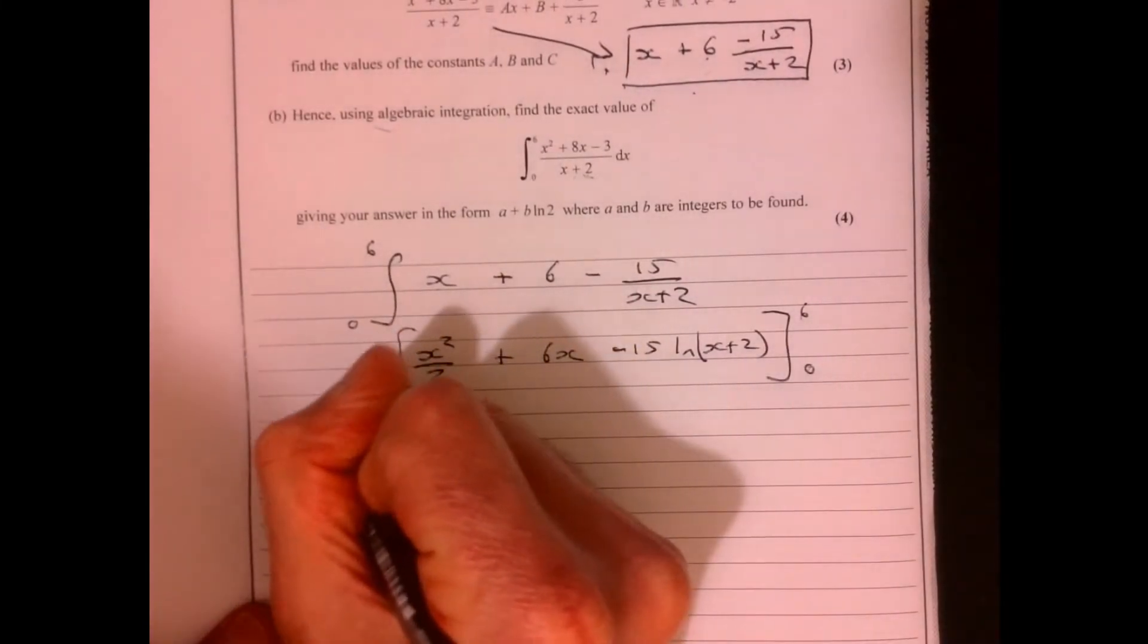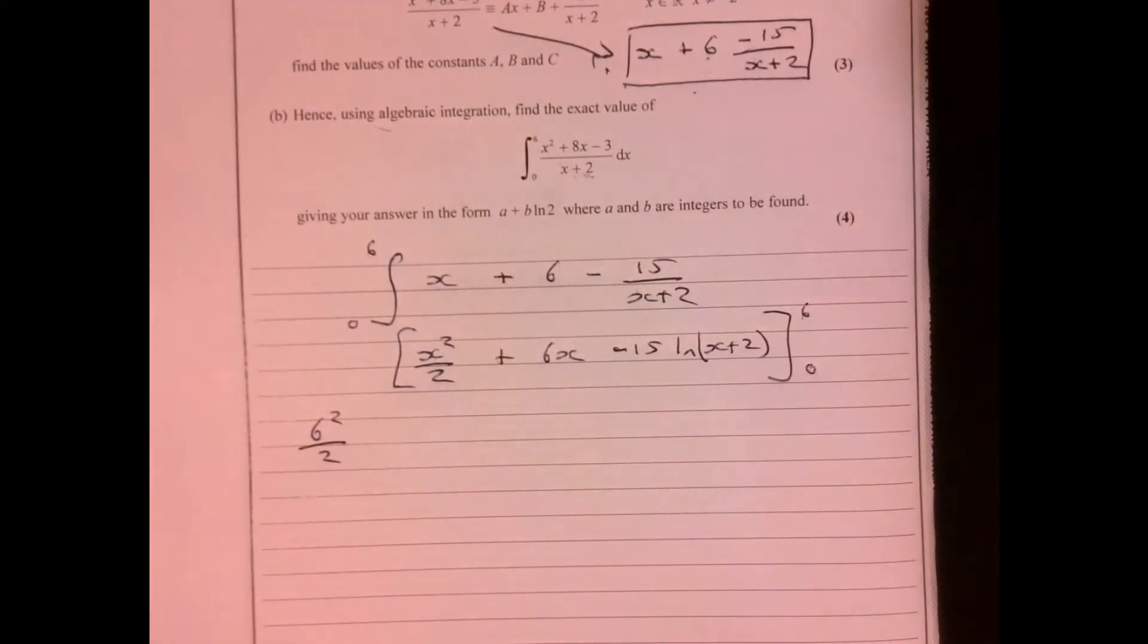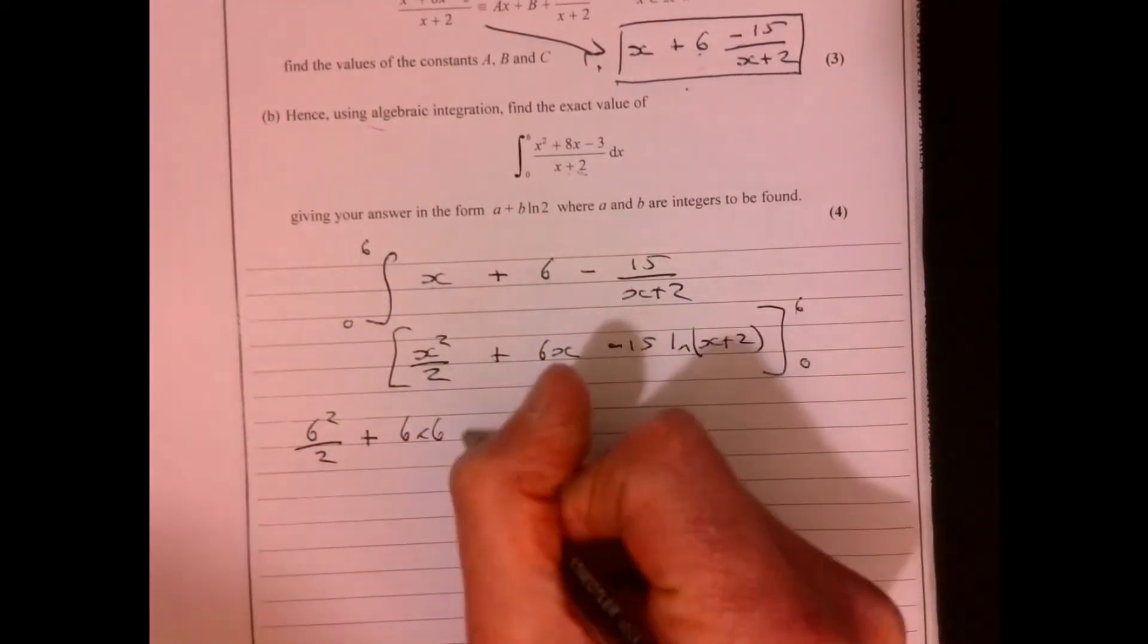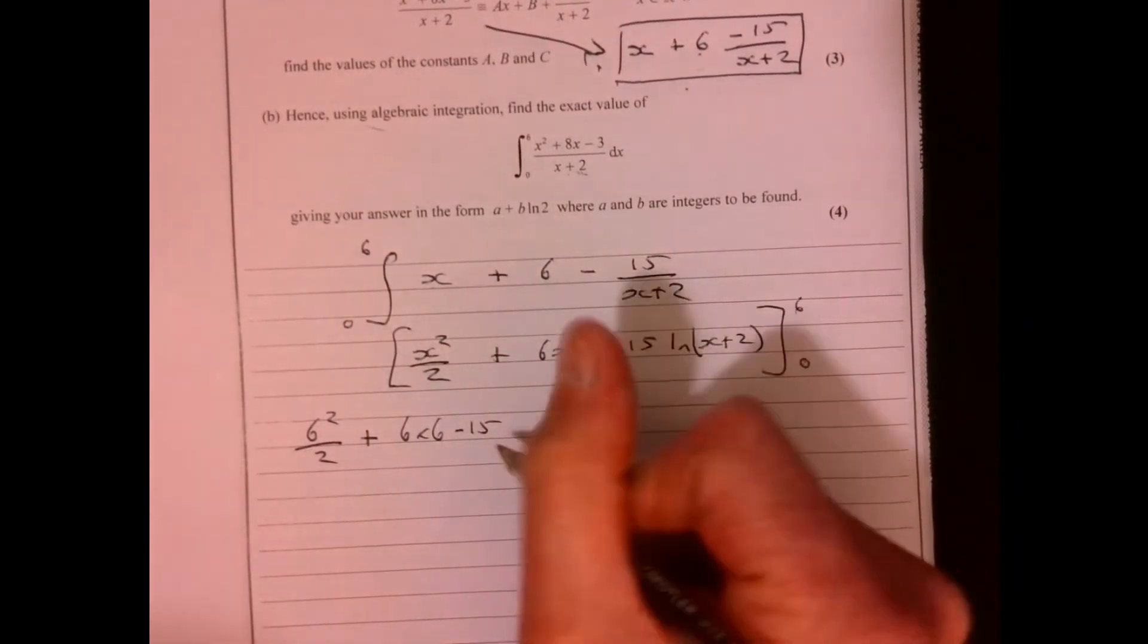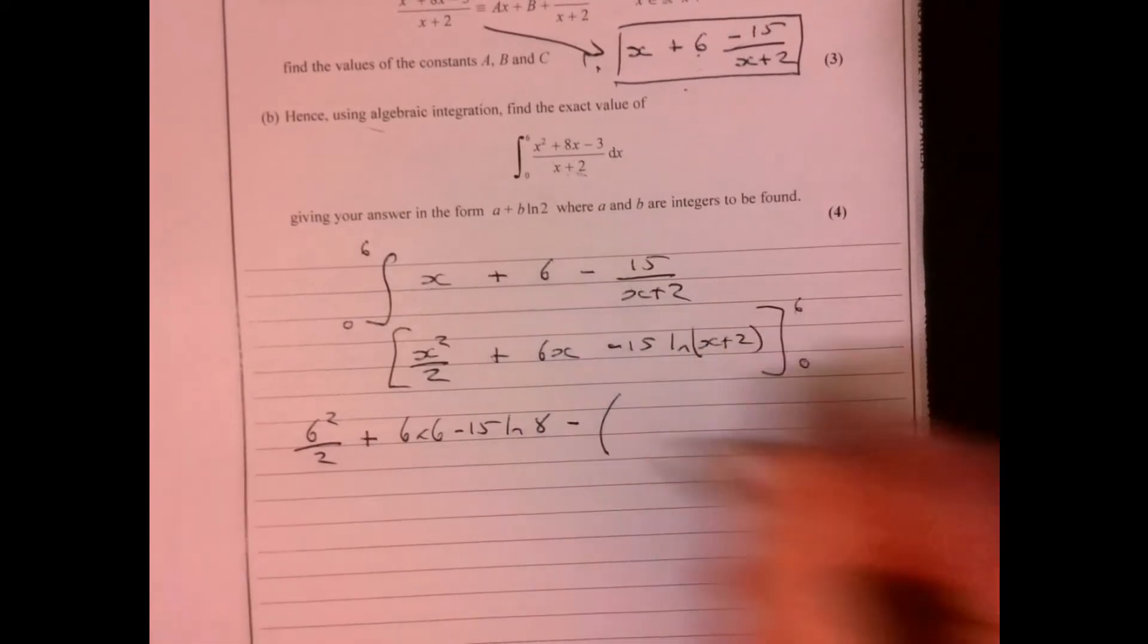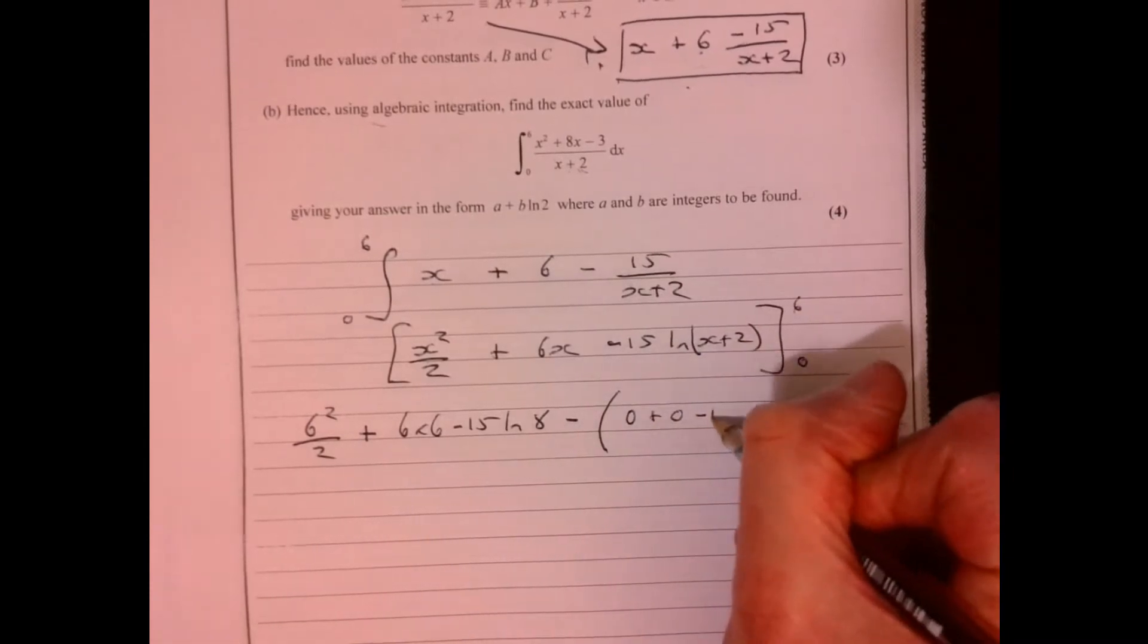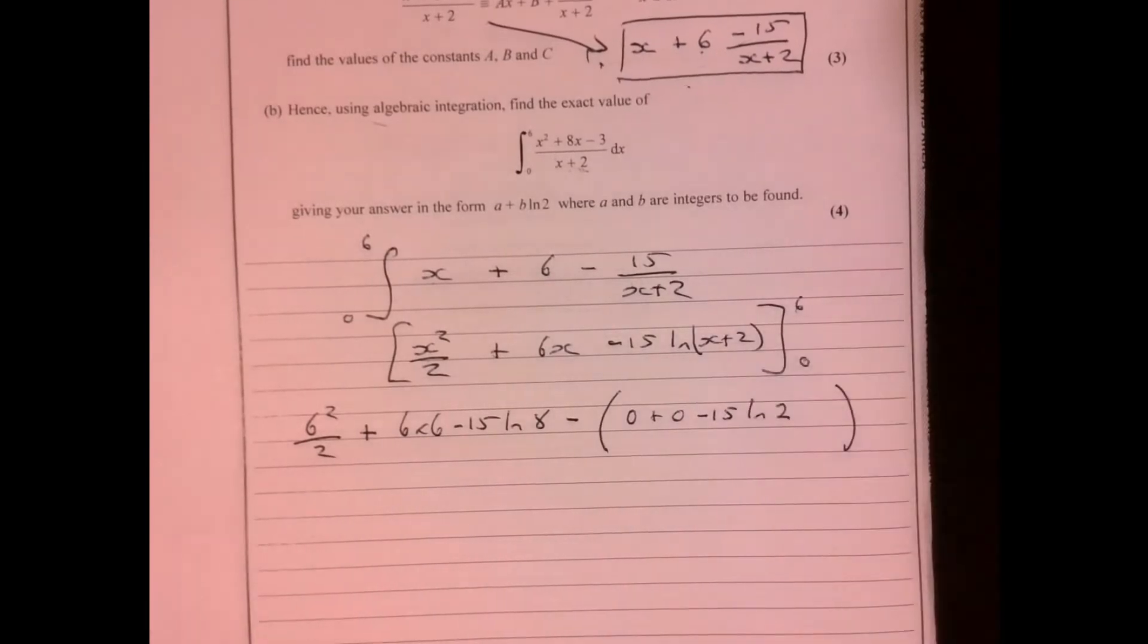What I tend to do, just to find it easier, is don't try and work out anything. Just do things one step at a time. Just write everything in, and then hopefully you'll see. I'm going to just write ln8 here. And then we're going to take away, but I'm glad it's 0, because that's 0 plus 0, 0 plus 0, take away minus 15 ln 2.